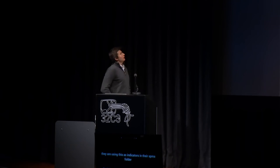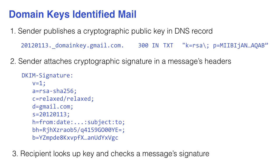Es ist mir auch schon passiert: ich habe eine E-Mail-Adresse bei meiner Uni, und wenn der E-Mail-Server strenge Regeln hätte, wären die meisten E-Mails einfach weggeworfen worden – das ist natürlich auch nicht praktikabel. Das nächste Verfahren ist DKIM. Es ermöglicht, einen Public Key im DNS-Eintrag zu veröffentlichen, und damit lassen sich ausgesendete Nachrichten signieren, sodass sichergestellt wird, dass eine E-Mail tatsächlich von einem bestimmten Server kommt.